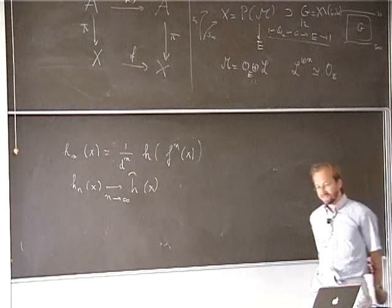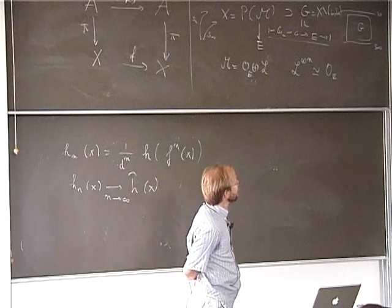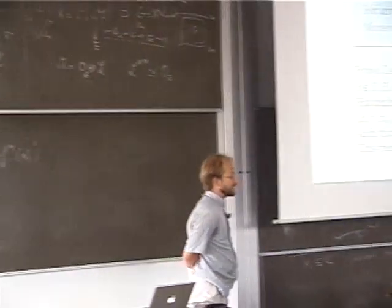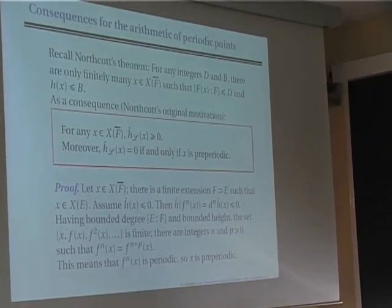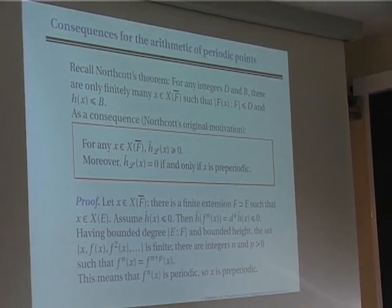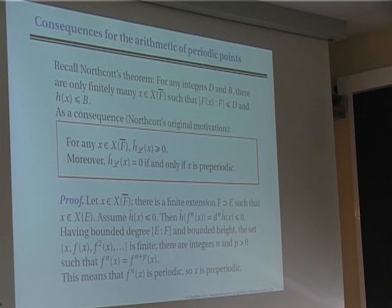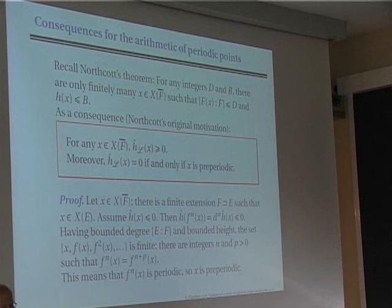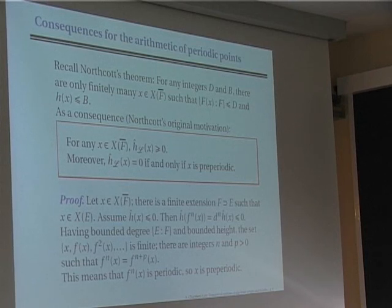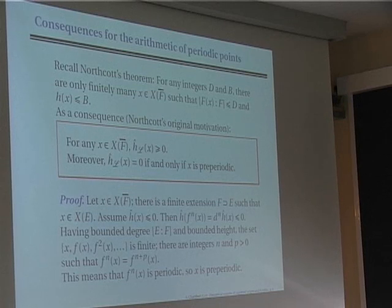I want to discuss some consequences of this canonical height concerning periodic points on dynamical systems. The major virtue of heights is Northcott's theorem: there are only finitely many points of bounded height and bounded degree. For any integers d and b, there are only finitely many points x such that the field of definition of x has degree less than d and the height of x is less than b. As a consequence, the canonical height of any point is non-negative, and the points whose canonical height is zero are precisely the preperiodic points.